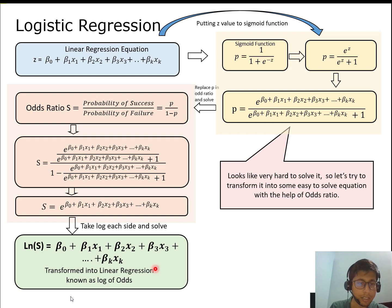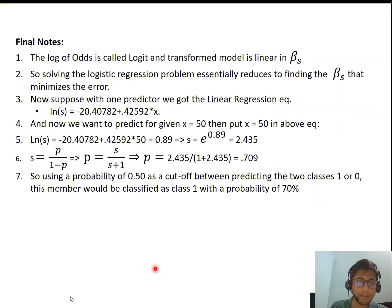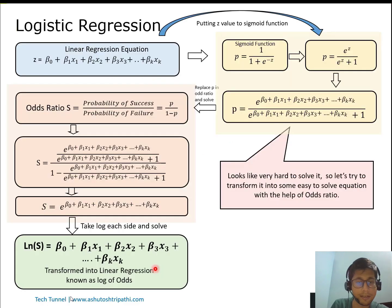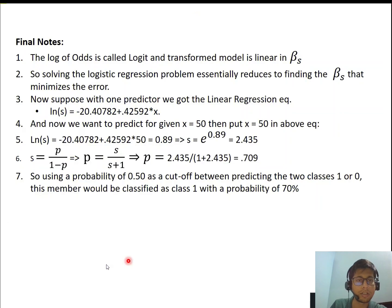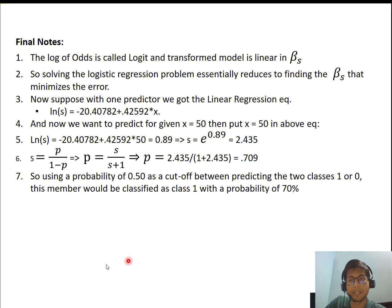The log of odds is also called the logit, and the transformed model is linear in the betas, as we have already seen. Solving the logistic regression problem essentially reduces to finding the betas that minimize the error.